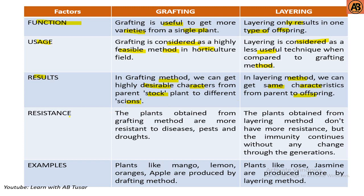Regarding resistance, plants obtained from grafting are more resistant to disease, pests, and droughts. Plants obtained from layering don't have greater resistance, but immunity continues without change through generations. Examples of grafting plants include mango, lemon, oranges, and apple. Plants like rose and jasmine are more commonly produced by layering.